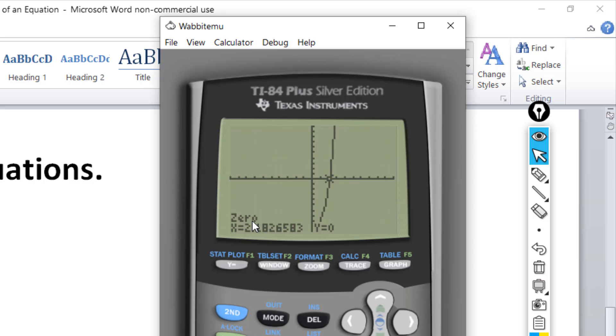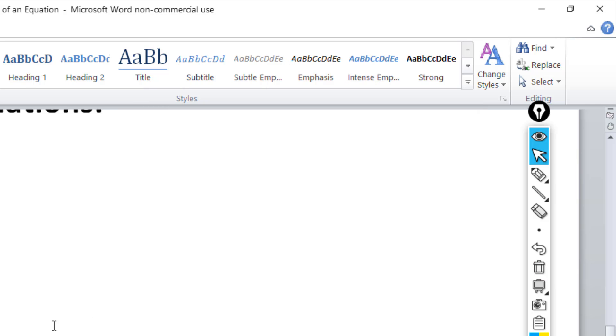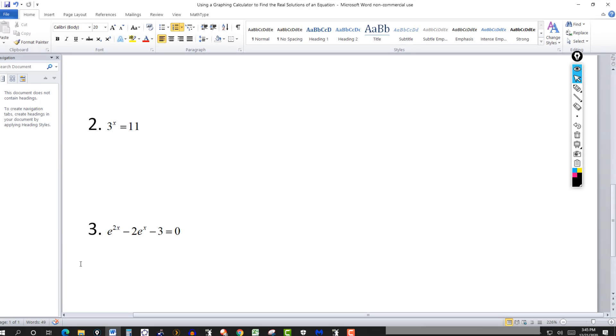So we get, we have a zero at x equals 2.182, 183. And we run it out to three places. So my real solution for this one is going to be x equal to 2.183. Clear this. Let's go to the next one.